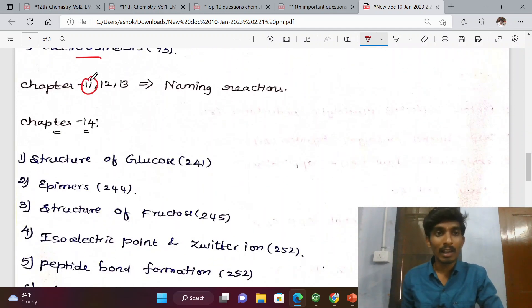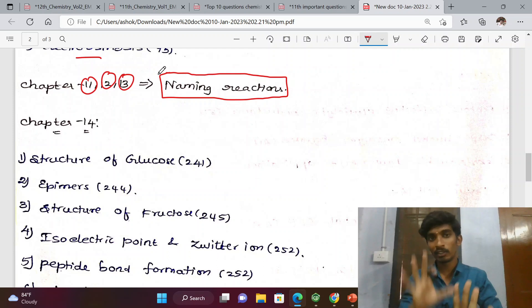Organic chapters 12 and 13: All naming reactions are first-level important. First-level important questions in organic are all naming reactions. Already one video, the link is in the description. You can download there. I have a plan for naming reactions - I will tell you about naming reactions that you can buy and study.